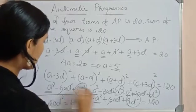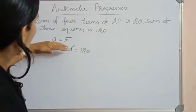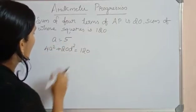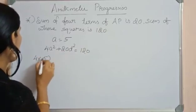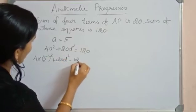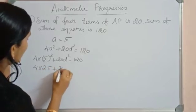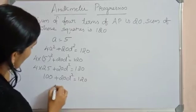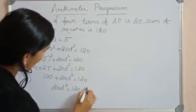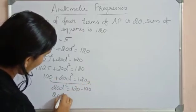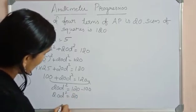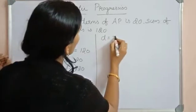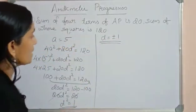Substituting a = 5: 4(5²) + 20d² = 120, so 4(25) + 20d² = 120, giving 100 + 20d² = 120. Therefore 20d² = 20, so d² = 1, meaning d = ±1.